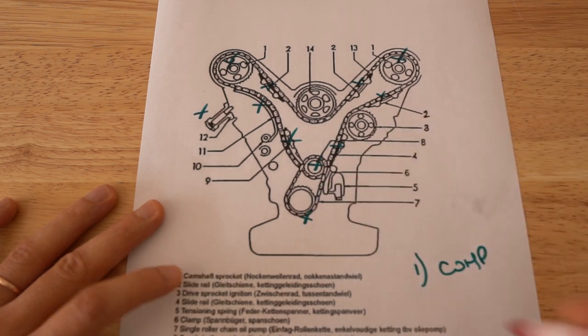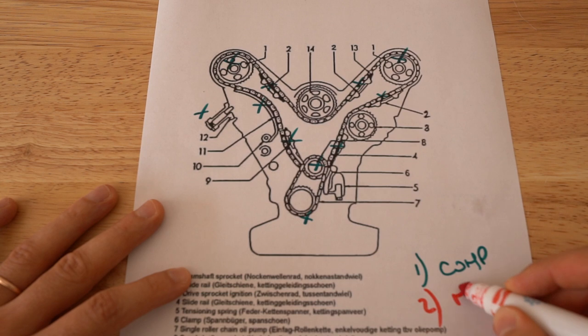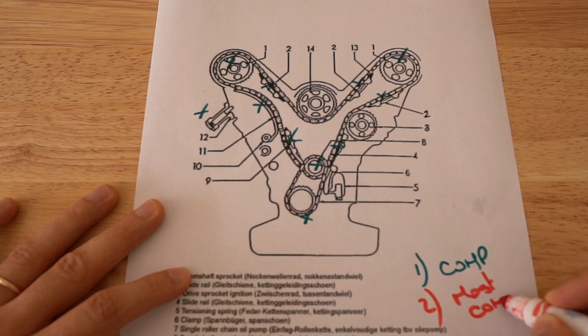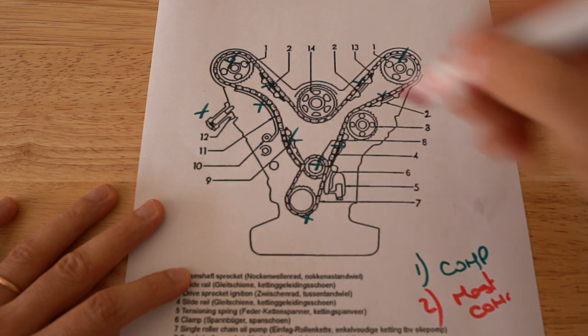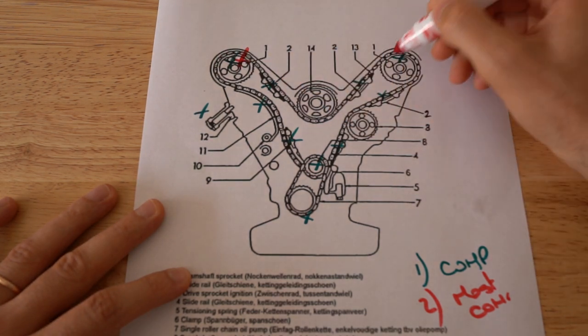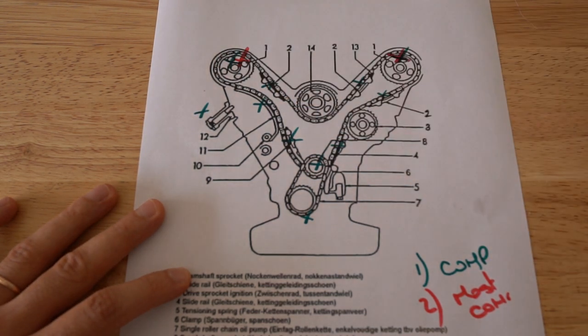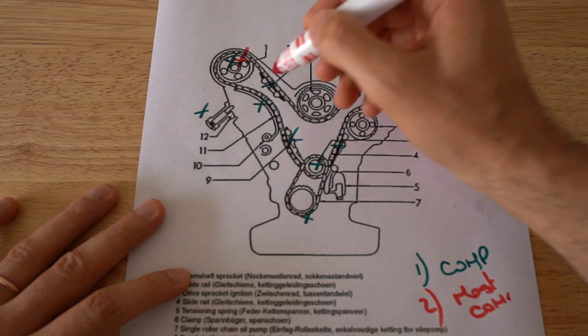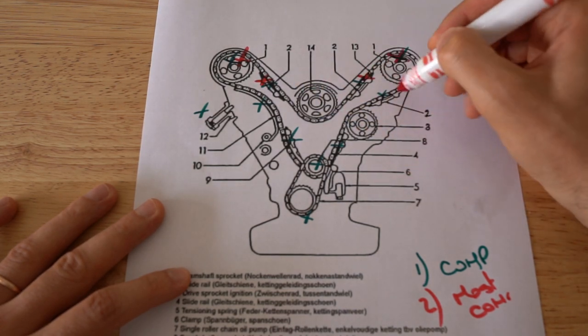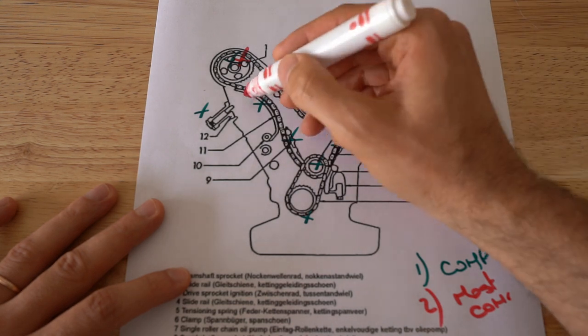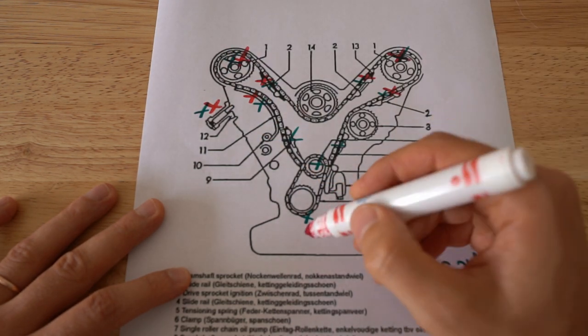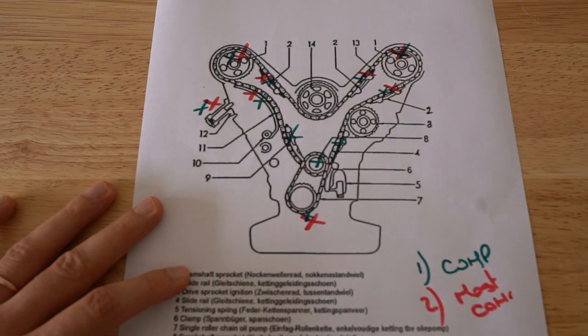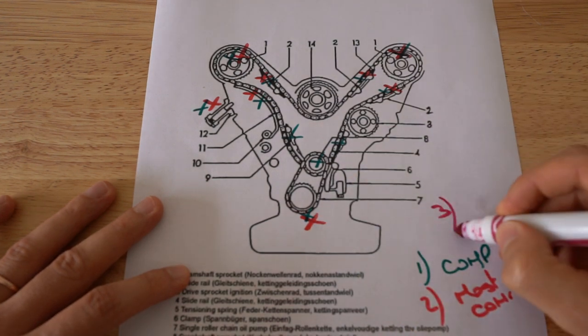The second way is the most common. The most common is basically replacing the sprockets, but only the ones from the camshaft, replacing the plastic guides but only the ones from the upper side, as well the tensioner, and the chain.